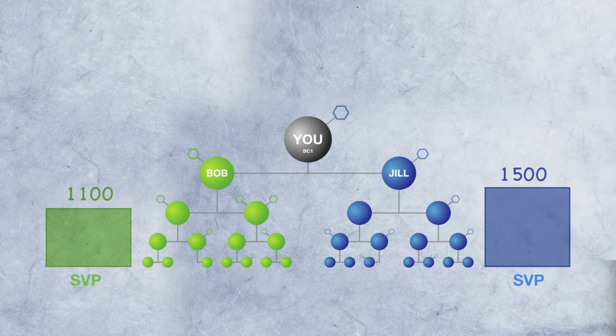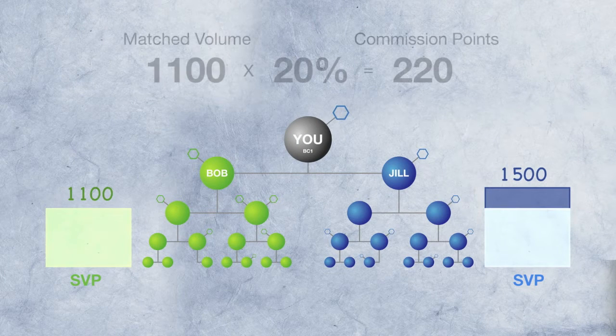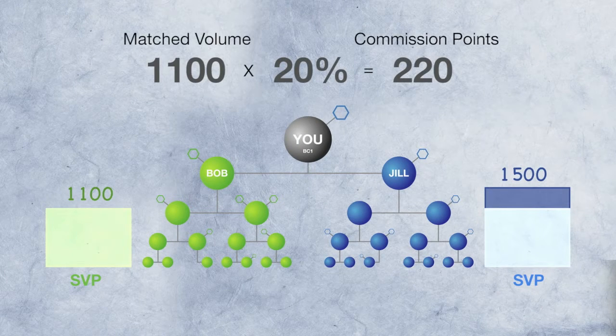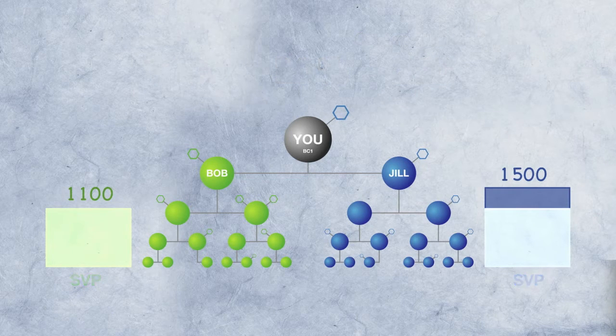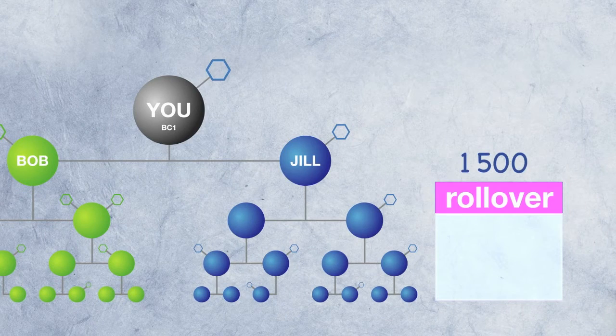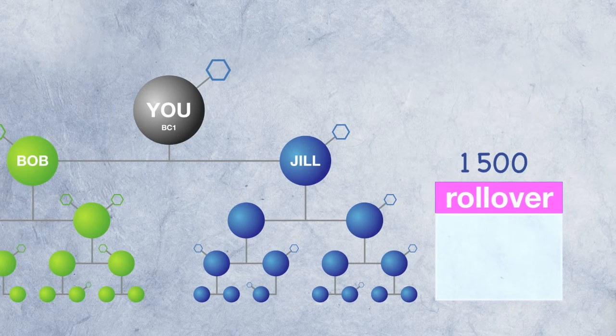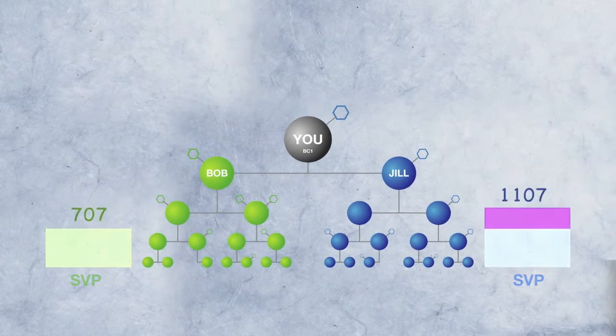So in this case, you'd earn 20% of 1100, or 220 commission points. And don't worry, you don't lose the extra points on the other side. They are automatically rolled over to the following week, up to five thousand points, to contribute to your next paycheck.